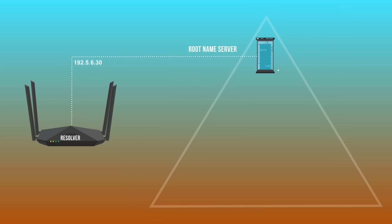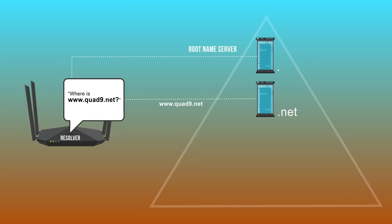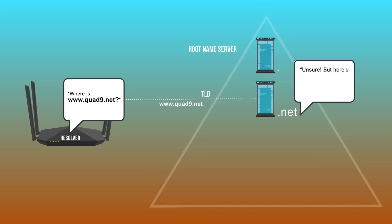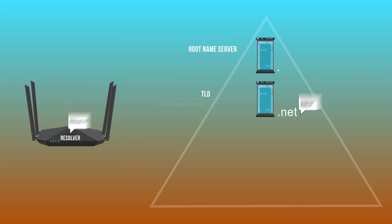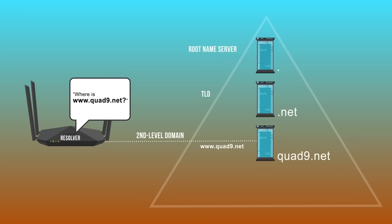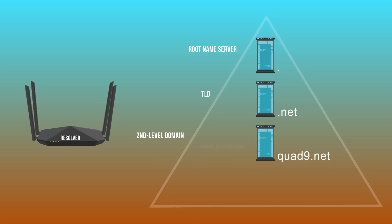The root name server gives you the address for the dot net TLD that has a record of every domain ending in dot net. Now your resolver will go there and ask, can you tell me where to find www.quad9.net? The TLD server might say, I don't have the answer, but I know who runs quad9.net — you should go talk to their name servers. You'll get an IP address for the authoritative server for quad9.net. So your resolver will go there and ask, where can I find www.quad9.net? You're not getting back the answer itself until you get all the way to the end.